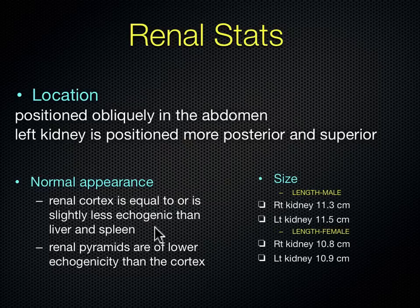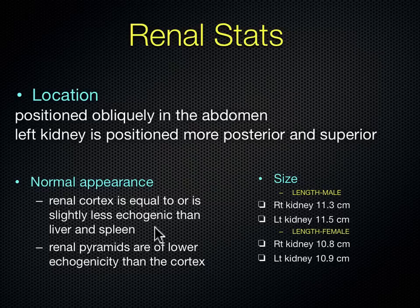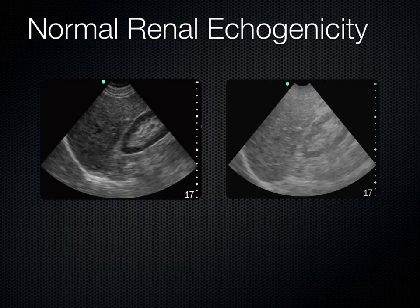Kidney sizes differ slightly between males and females — kidneys are about half a centimeter bigger in males. The right kidney is actually smaller than the left; in males the right kidney is about 11.3 cm and the left is 11.5 cm. The left kidney is bigger because the aorta travels down the left side of the spine. Being closer to the aorta, the left kidney gets a more direct blood supply and grows slightly larger over time.